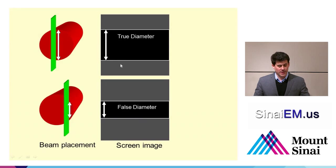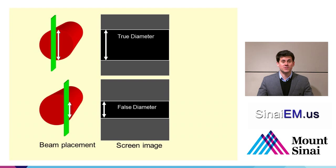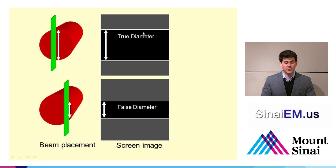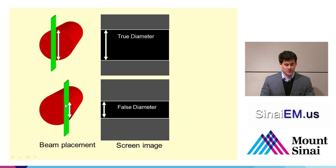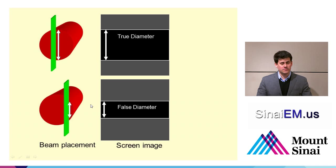A couple of important points when looking at the transverse or longitudinal view: it's critical to look at the largest diameter. If you send the ultrasound beam through the central diameter, you get the true diameter with bright echogenic lines anteriorly and posteriorly and an anechoic center. If you go off-center, you're measuring a chord rather than a true diameter, giving a falsely small measurement. Make sure you scan through the maximal diameter for an accurate measurement — this applies to any vessel, including the IVC.